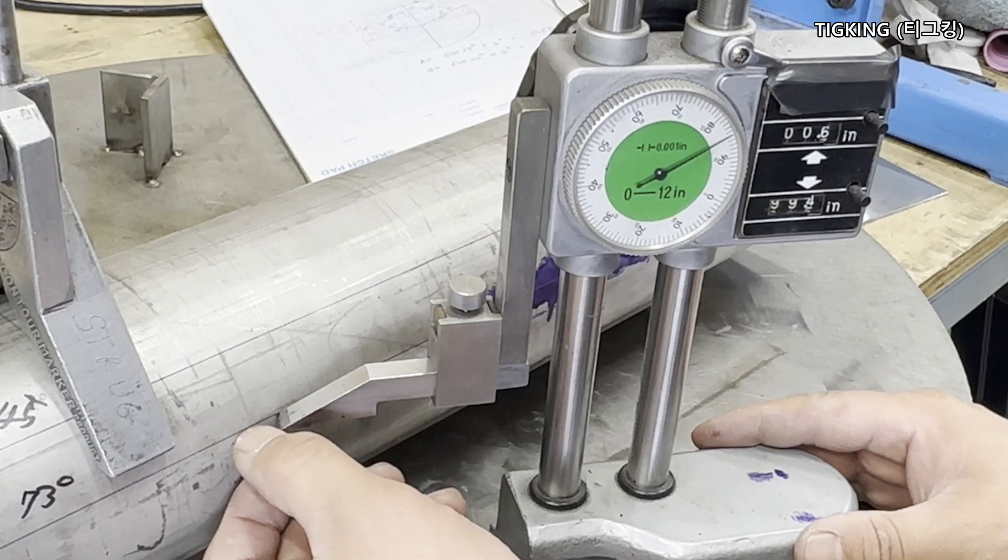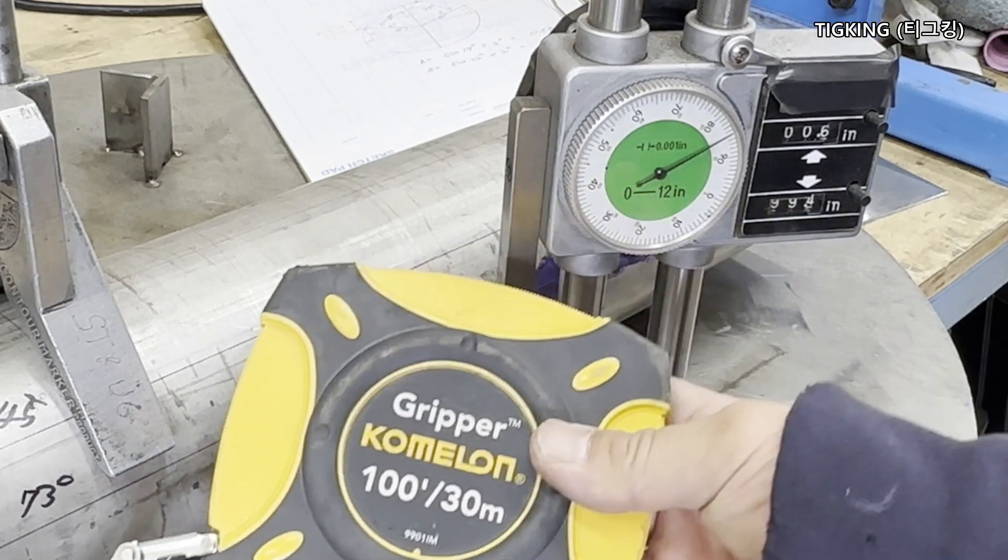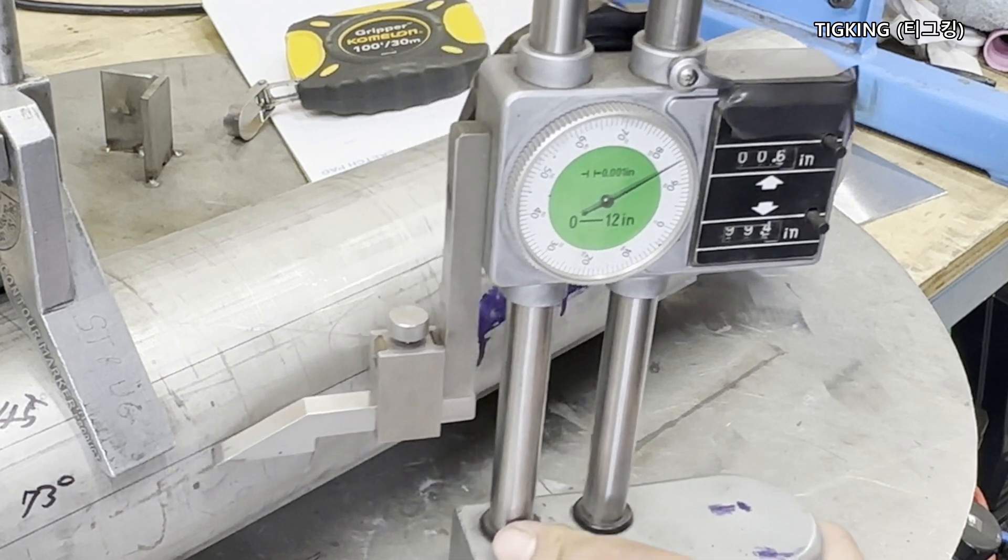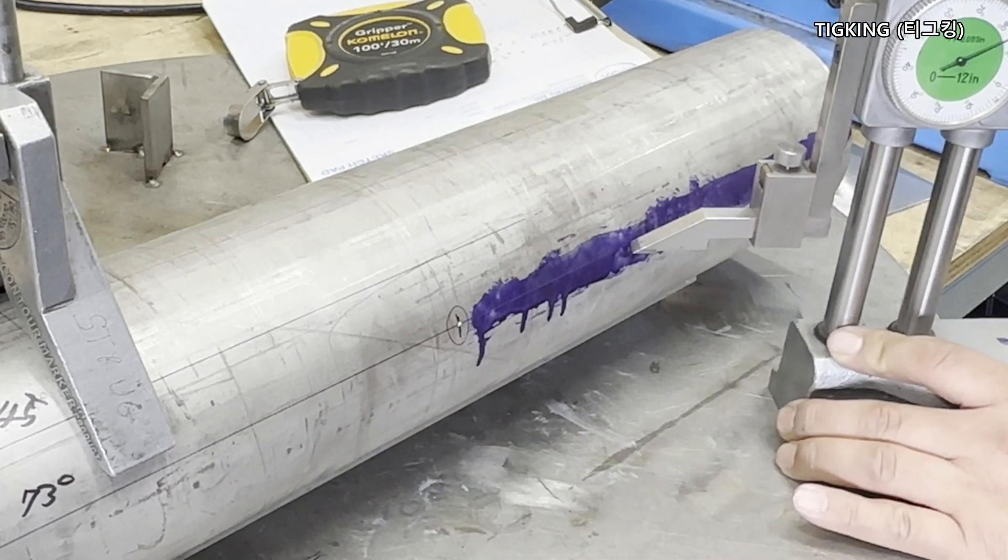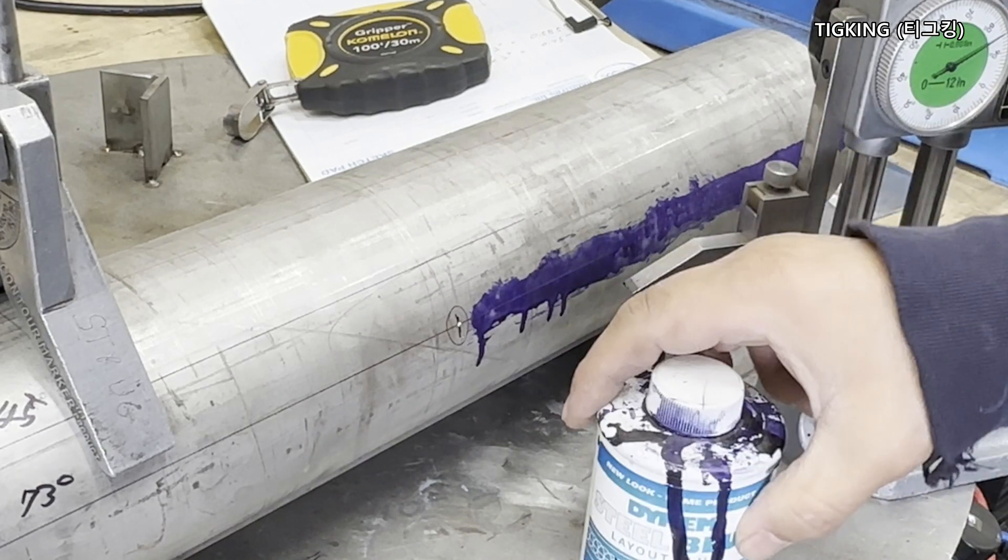The line was made when I laid out using the circumference tape. Now, we can confirm with the height gauge. Both ways are very accurate. What you have to do is just scribe it. For better visibility, I use the layout dye mostly.